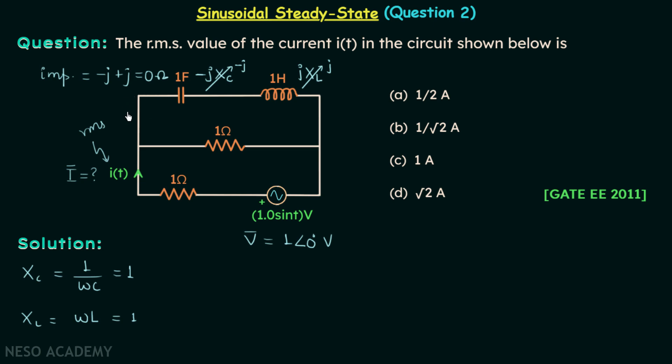In simple words we can see that this branch is not going to offer any obstruction to the current flow, and therefore at this node current will decide to flow entirely through this branch. Therefore no current will flow through this branch.